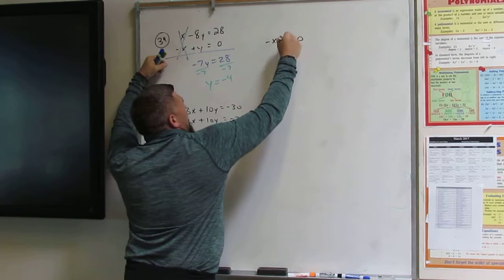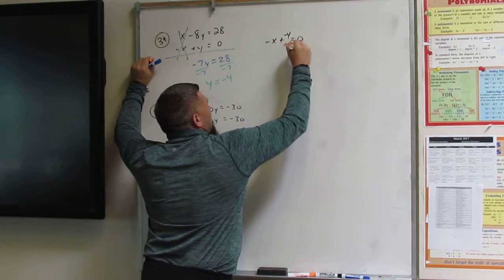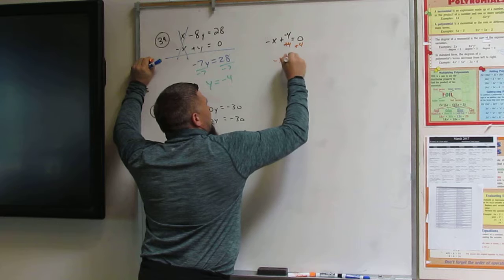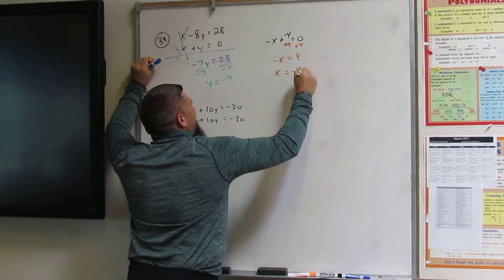Now the y is going to be a negative 4. Okay? So then I'm going to add 4. So then negative x is equal to 4. So then I'm going to change the signs. X is going to be negative 4.